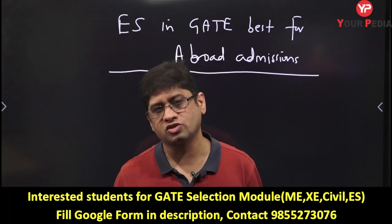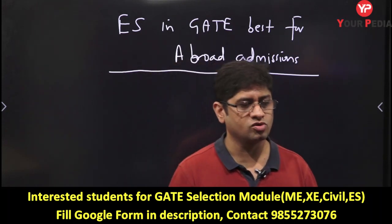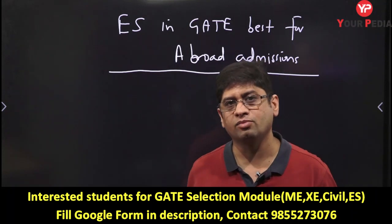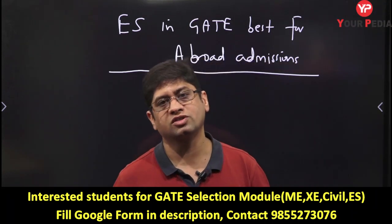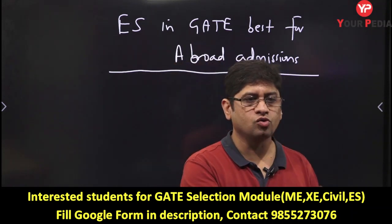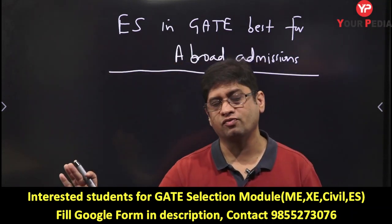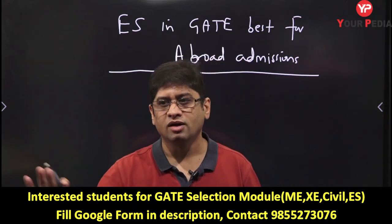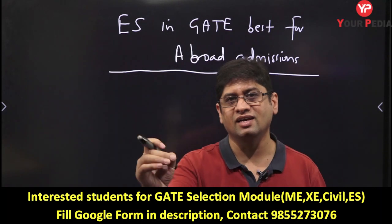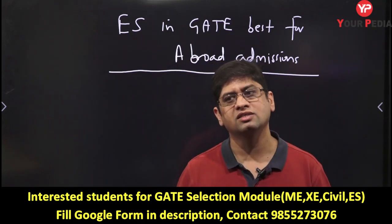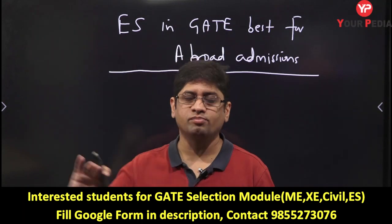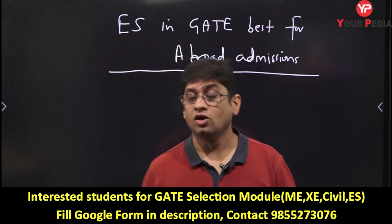Pursuing an MS abroad costs some money, so we normally say that if you do your MS from India first and then do a PhD abroad, that can be very good because you get a lot of scholarship for a PhD. So for those who want to go abroad for PhD and build a career abroad through scholarship, they should write GATE with Environment Science — not Civil — so they get a good score, get into IITs, and then pursue their forward strategy.